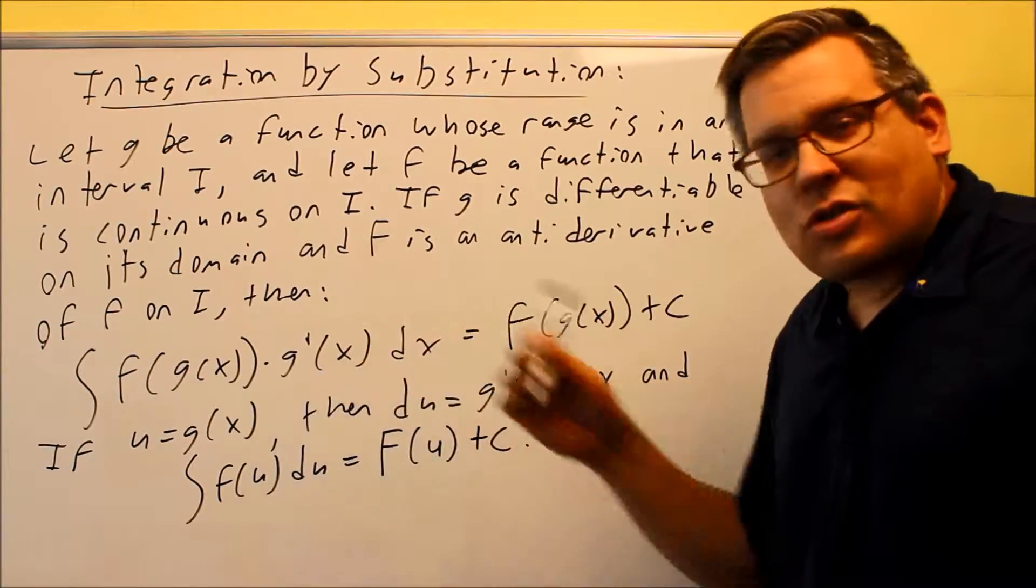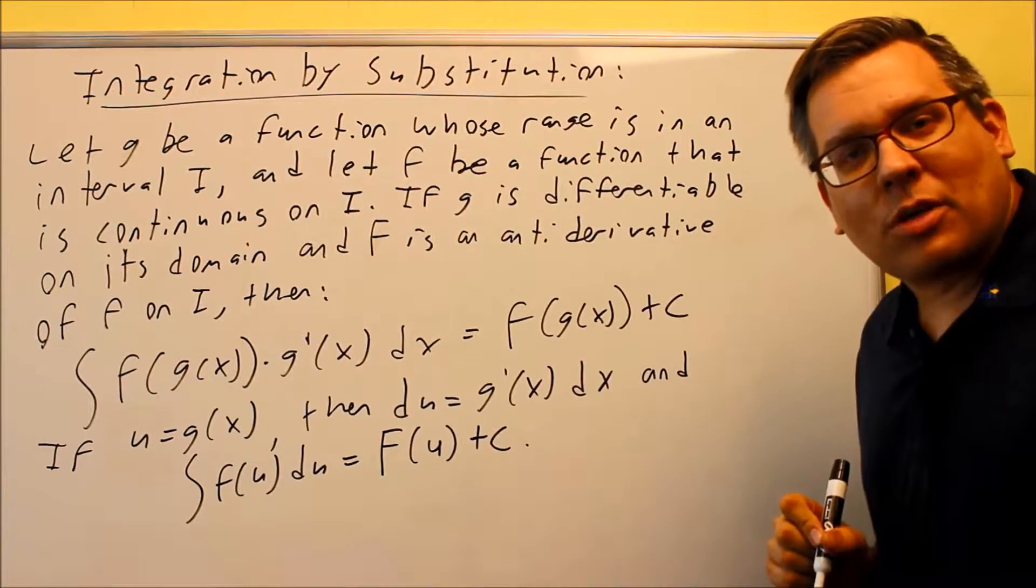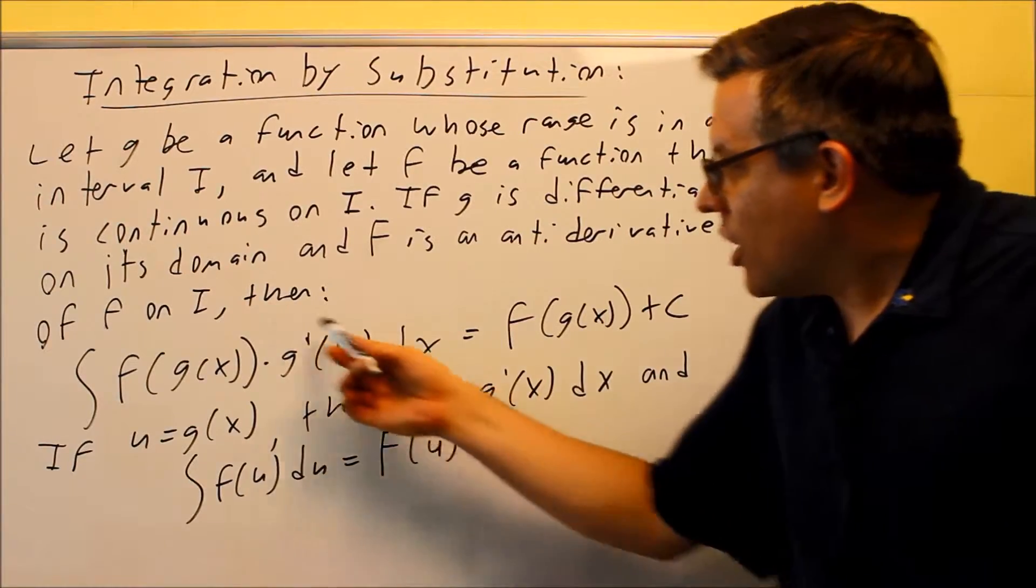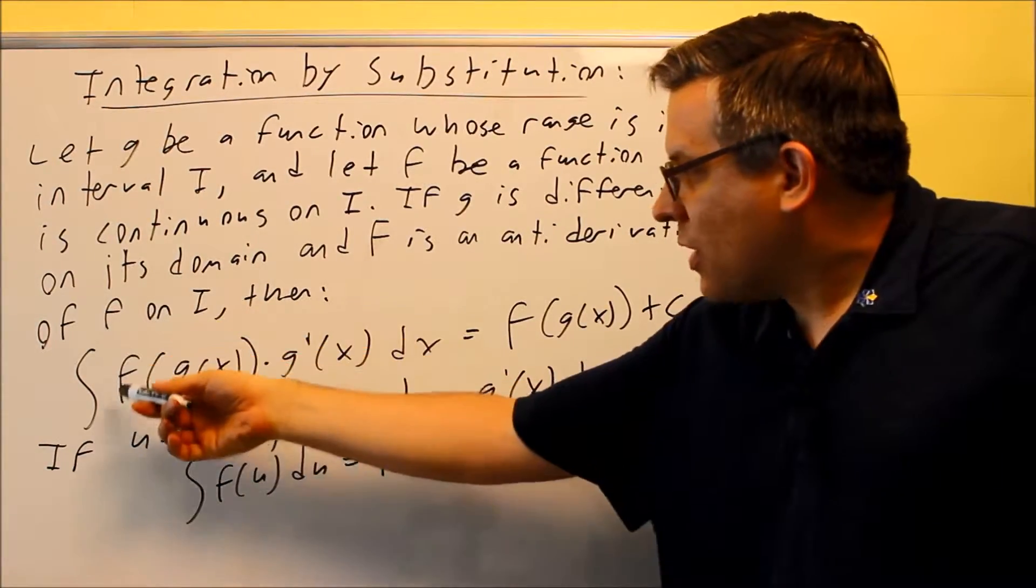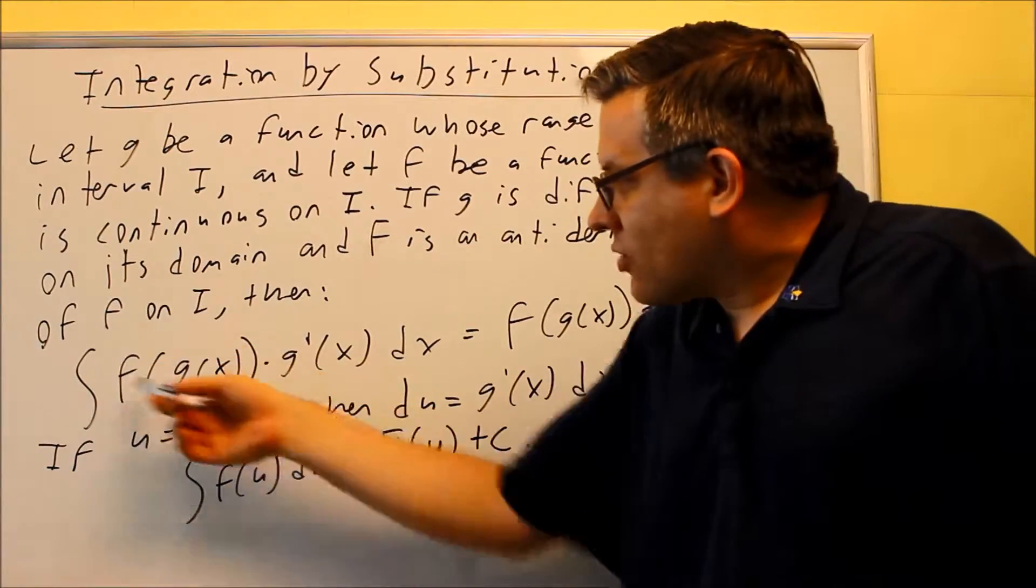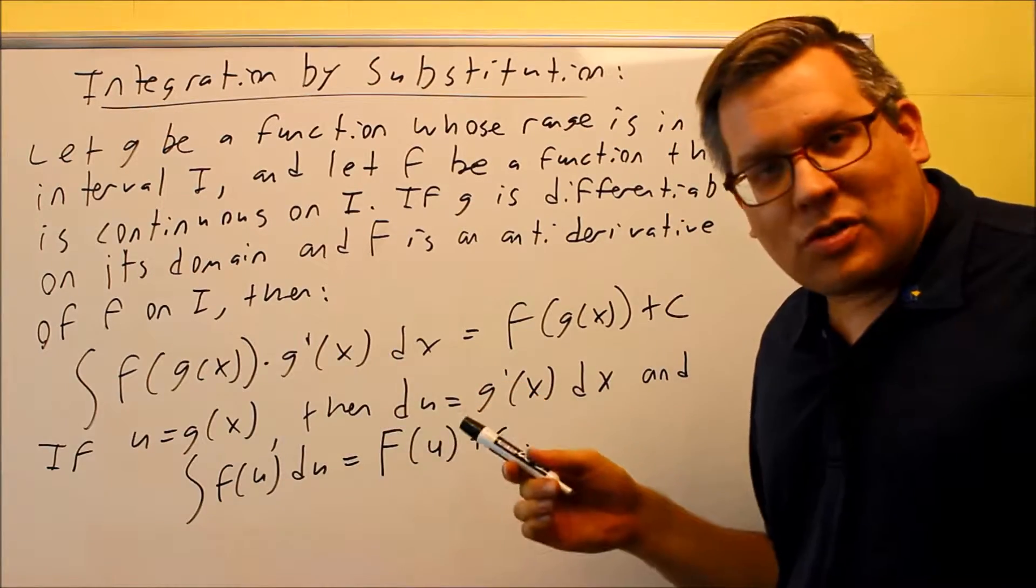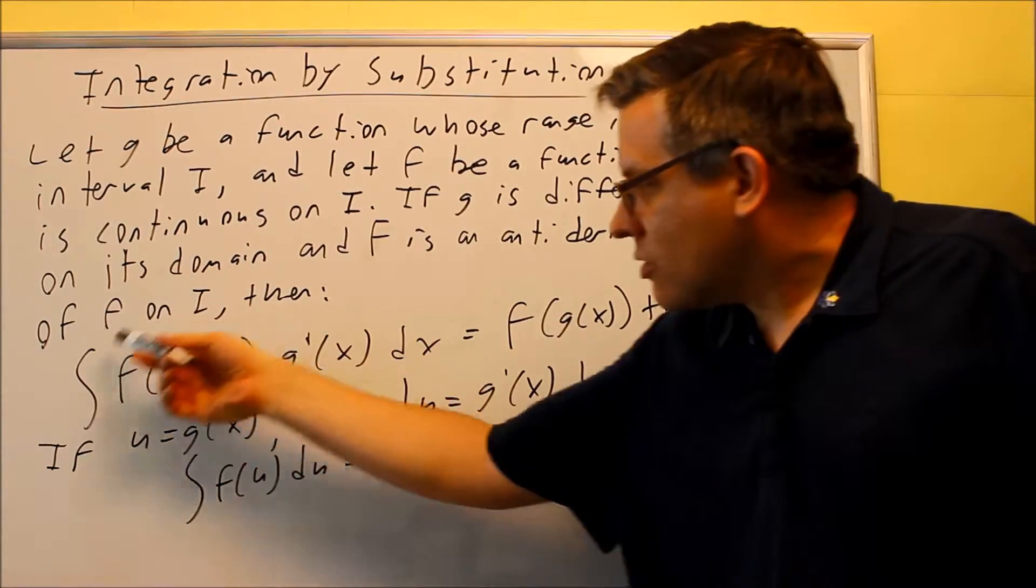So what it is, it's basically the reverse steps of doing the chain rule. Chain rule we talked about a long time ago in this course. So the chain rule, remember that that's basically you have an inside and outside function and you basically take the derivative of the outside function and you multiply it by the derivative of the inside.